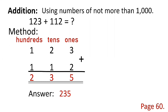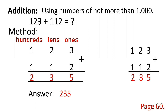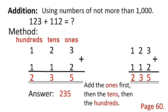So the answer is 235. We will add it again simply: 123 plus 112 — 3 plus 2 is 5, 2 plus 1 is 3, 1 plus 1 is 2. Same answer. Please take note: add the ones first, then the tens, then the hundreds. You cannot start from hundreds or tens place. You must start in ones place.